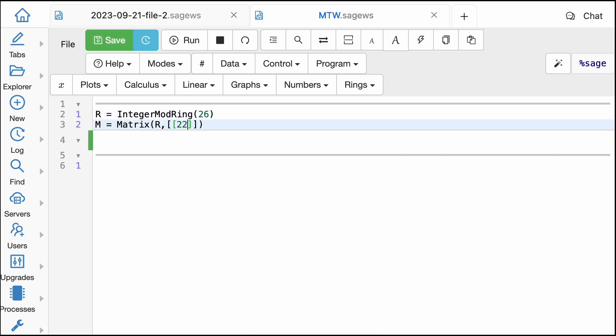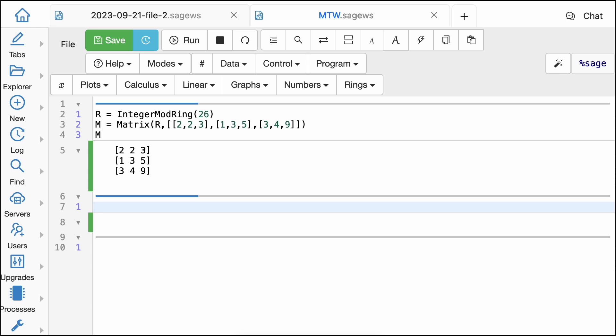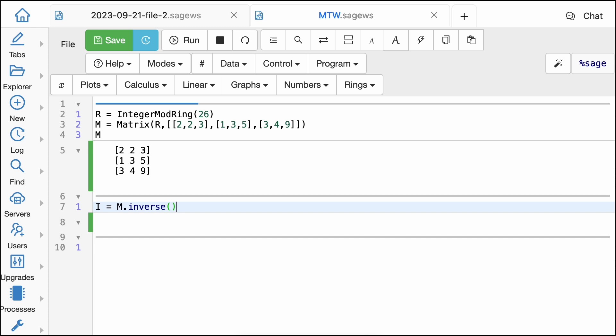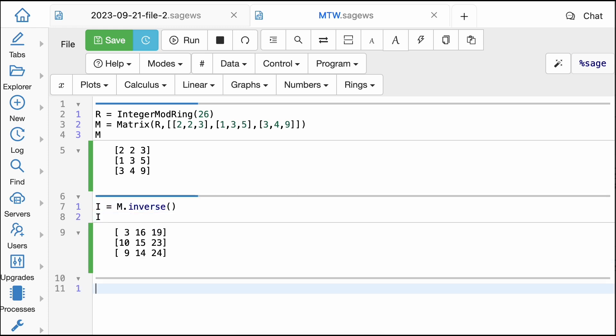SageMath is an online math program and is particularly useful for doing these calculations as it works smoothly in modular arithmetic. Using this computation program we can find the inverse matrix mod 26 to be this one: 3, 16, 19; 10, 15, 23; 9, 14, 24.